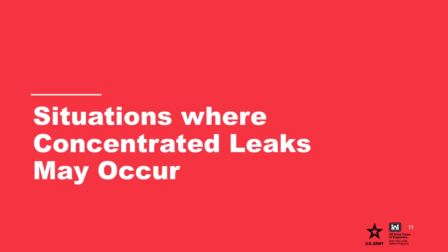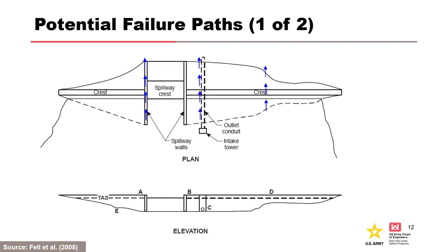Concentrated leaks may occur in many situations. Where information is available for estimating crack width and depth of a given mechanism, it is included. Failure paths can be associated with structures, foundations, or poor details in the dam. These include locations adjacent to spillway walls, adjacent to the outlet conduit, and over irregularities in the foundation where low stresses and potential for cracking and hydraulic fracture due to differential settlement are likely. Potential failure paths can also be associated with high permeability layers through any portion of the embankment.